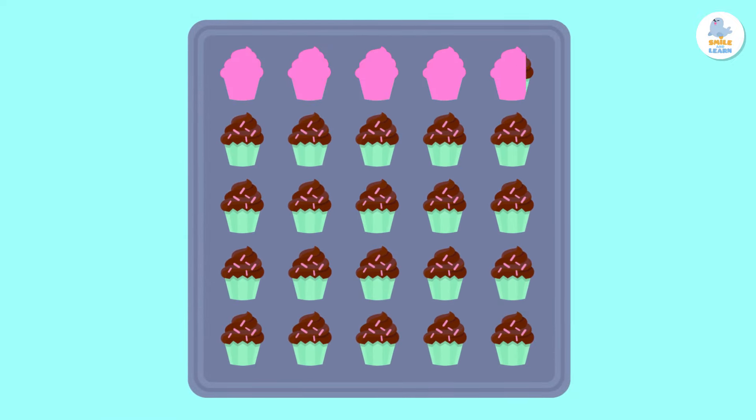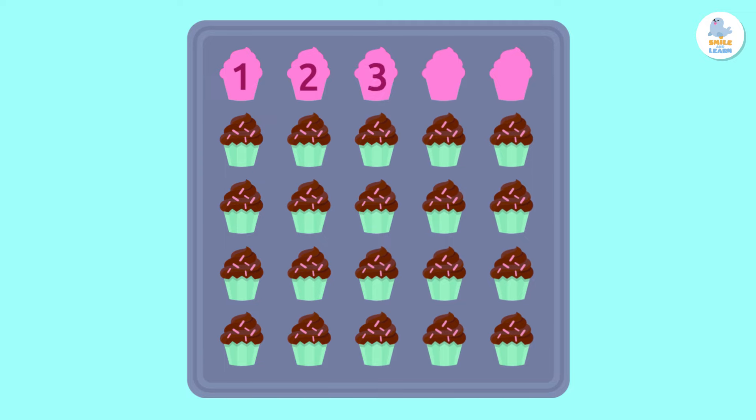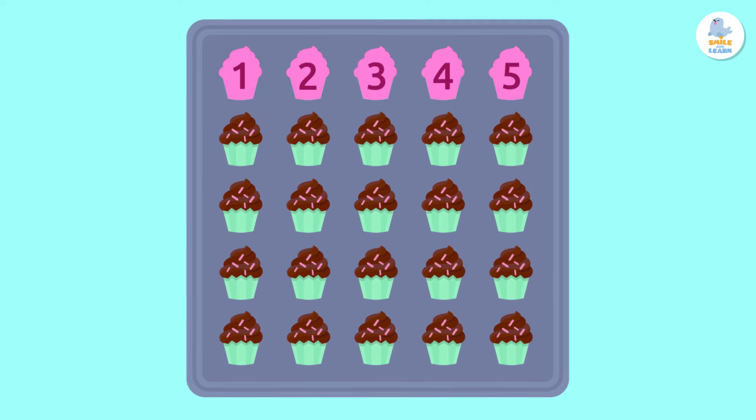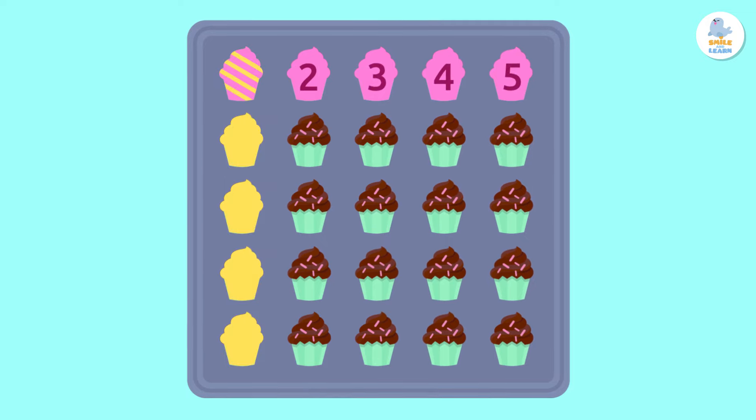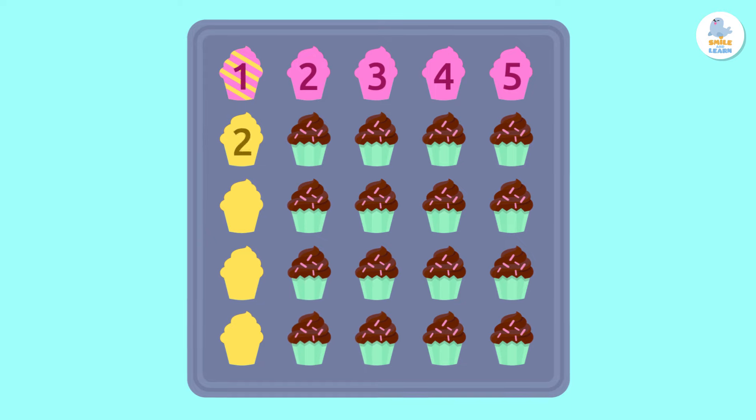Let's check the result. The horizontal side has 1, 2, 3, 4, 5 columns, and the vertical side has 1, 2, 3, 4, 5 rows.